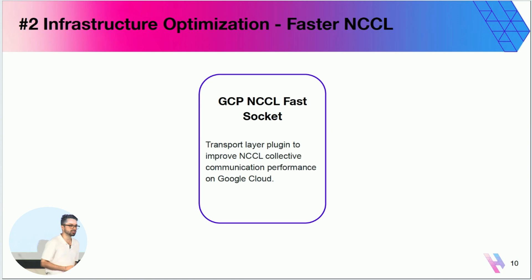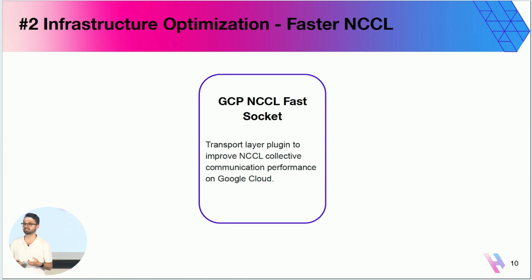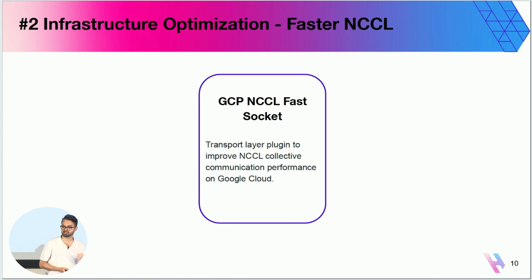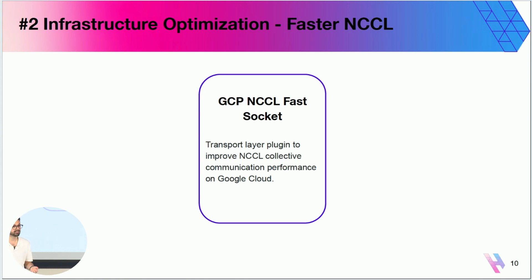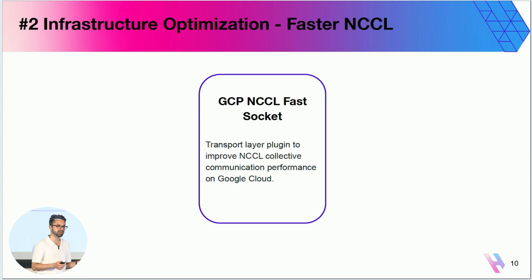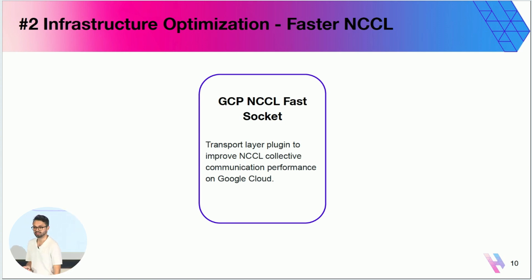The second infrastructure optimization that will help speed things up is faster NCCL operations. When training large models, there are a lot of collective operations happening, and under the hood it's most likely using NVIDIA's NCCL library. If you are on GCP — as we are at Spotify — one really quick way to speed this up is to use NCCL Fast Socket, a transport layer plugin on top of GCP that speeds the entire training process. It's really easy to enable on your VM and will give you some additional speed.